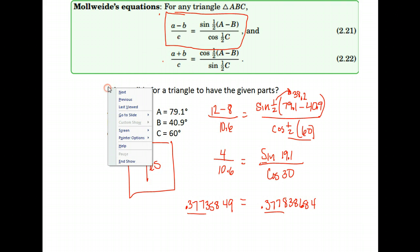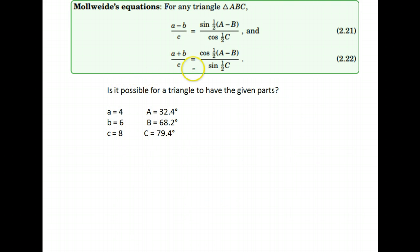I'm going to show you an example of one that's not, so you can see what the difference might look like. Here's another example where we're asked if this is the possible parts for a triangle. Again I'm going to use the top one. So we're going to do a minus b, so 4 minus 6, over c is 8.